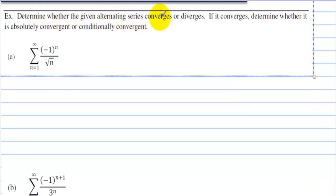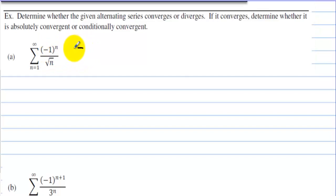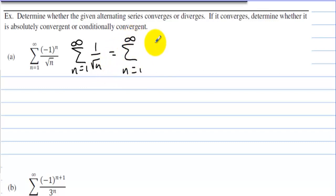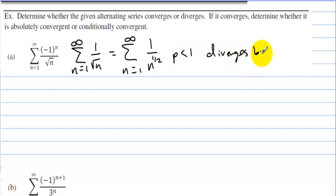Determine whether the given alternating series converges or diverges. If it converges, determine whether it is absolutely convergent or conditionally convergent. We're going to look at this series — it is an alternating series. If we take the absolute value of a_n, it gets rid of the (-1)^n, making everything positive. We then have the sum from n=1 to infinity of 1 over the square root of n, which equals the sum of 1 over n^(1/2). Since p = 1/2 is less than 1, this diverges by the p-series test.